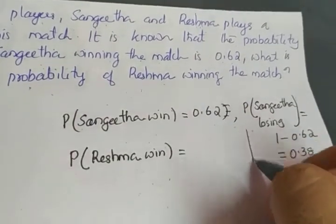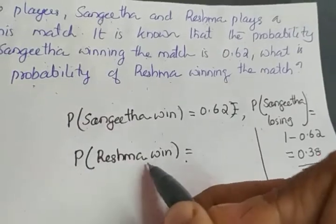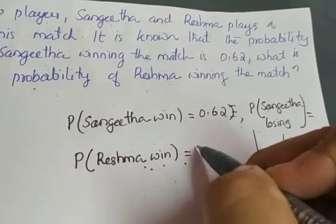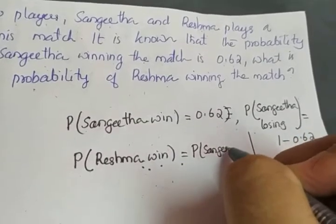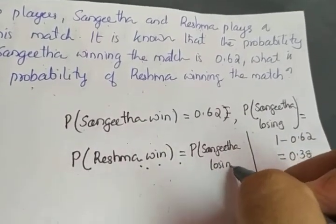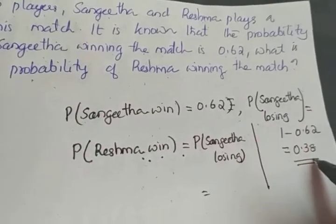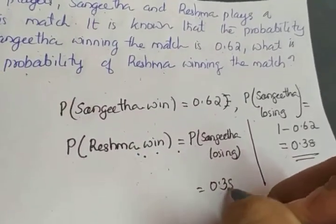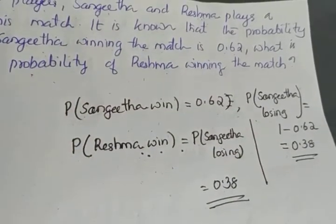Our question is to find the probability of Reshma winning the game. Reshma winning the game is equal to Sangeeta losing the game. We already calculated Sangeeta losing the game as 0.38. So the probability of Reshma winning the game is 0.38.